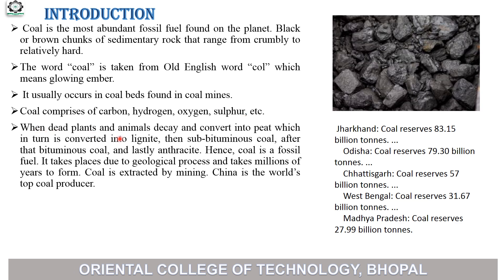When dead plants and animals decay, they convert into peat, which in turn is converted into lignite, then subbituminous coal, after that bituminous coal, and lastly anthracite. Hence, coal is a fossil fuel. It takes place due to geological processes and takes millions of years to form. Coal is extracted by mining. China is the world's top coal producer.